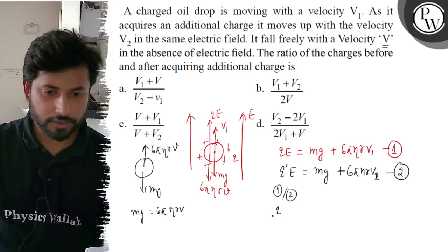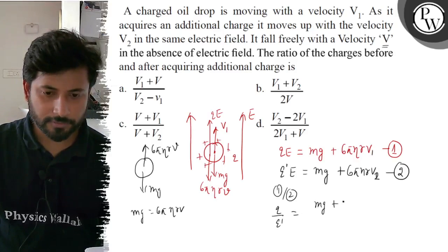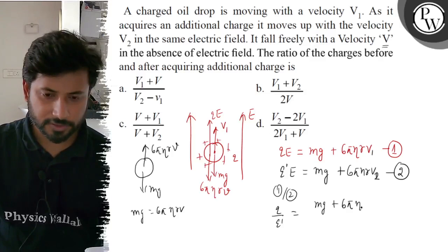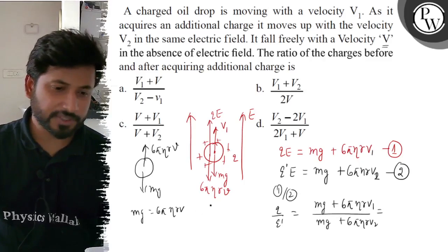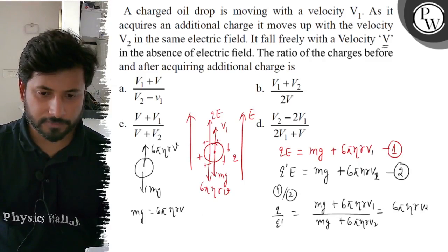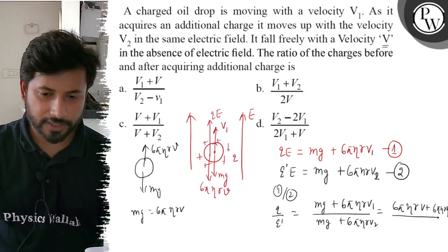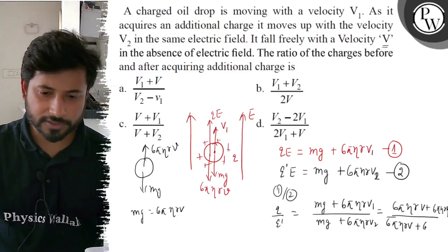So this is Q by Q' equals mg plus 6πηRV1 divided by mg plus 6πηRV2. Our mg is 6πηRV, so this becomes 6πηRV plus 6πηRV1 divided by 6πηRV plus 6πηRV2.